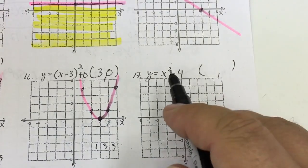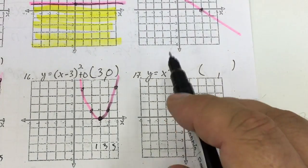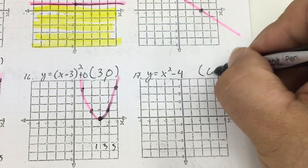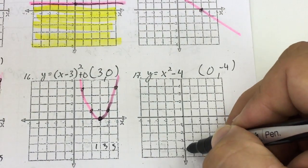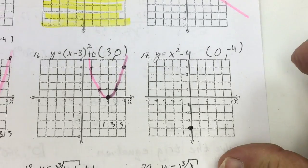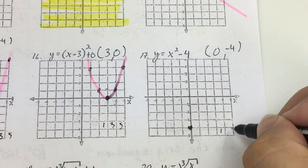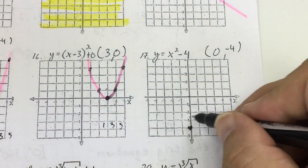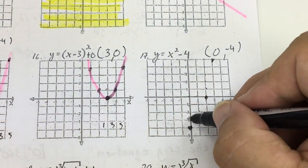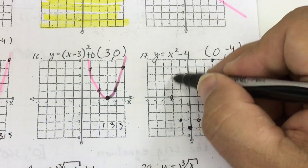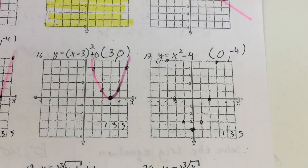Another quadratic. This time there's nothing grouped with the x, so the vertex is going to be (0, negative 4) — a vertical shift down 4. I implement the 1, 3, 5 pattern: up 1 over 1, up 5 over 1, going left as well. And there's my parabola.